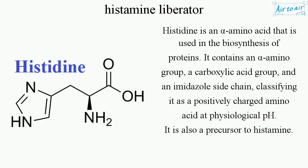Histidine is an alpha-amino acid used in the biosynthesis of proteins. It contains an alpha-amino group, a carboxylic acid group, and an imidazole sidechain, classifying it as a positively charged amino acid at physiological pH. It is also a precursor to histamine.